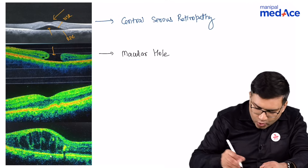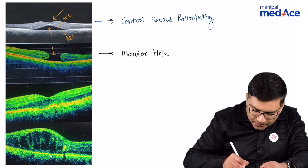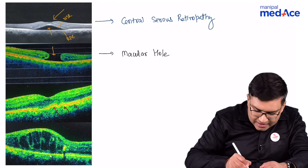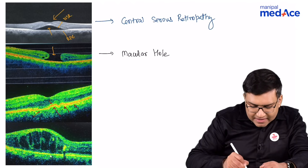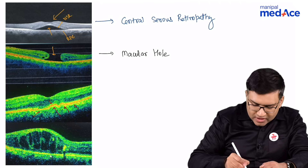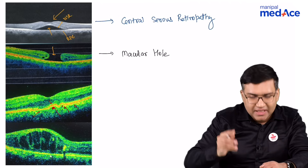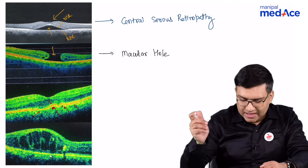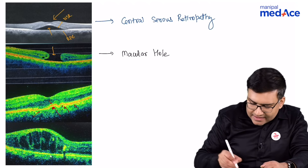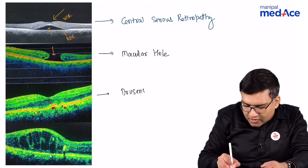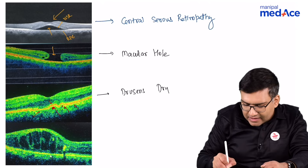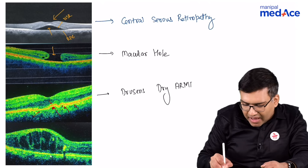See the third image. Here you can see that the retinal pigment epithelium shows a wavy, undulating pattern. Something is deposited beneath the retinal pigment epithelium. This represents drusen, which are seen in dry age-related macular degeneration.